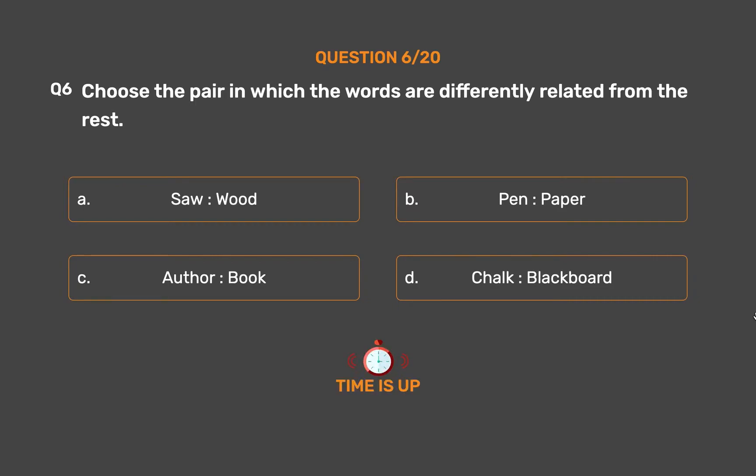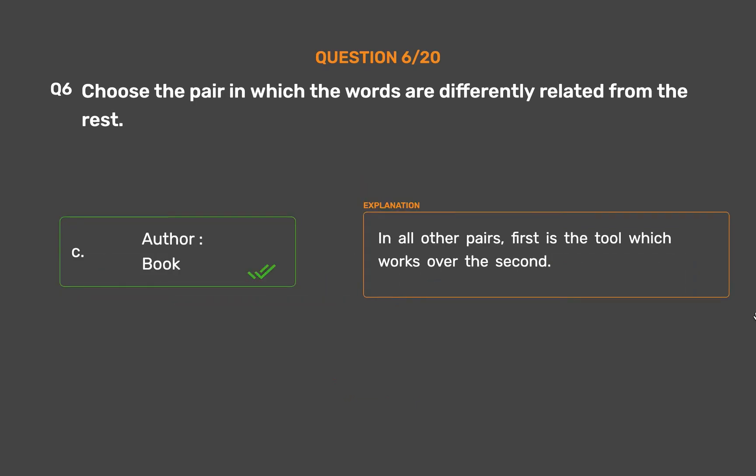The correct answer is Option C: Author, Book. In all other pairs, the first is the tool which works over the second.